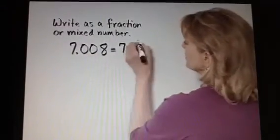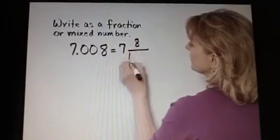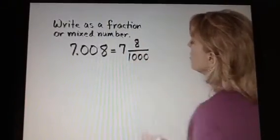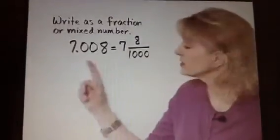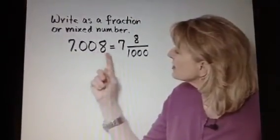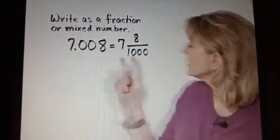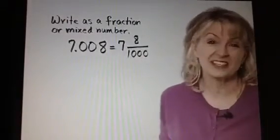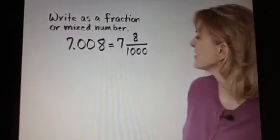It's 8 thousandths, so we write 8 thousandths. And then remember, once again, double-check, there are three places to the right of the decimal point, and notice there are three zeros. So keep that in mind. That will help you.